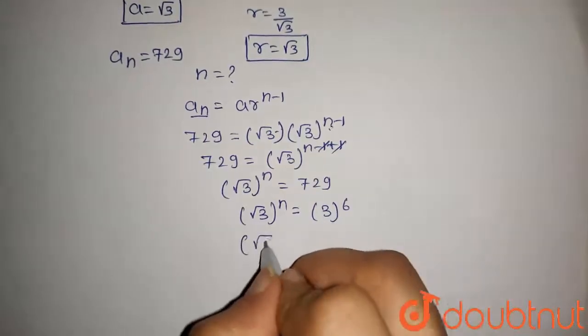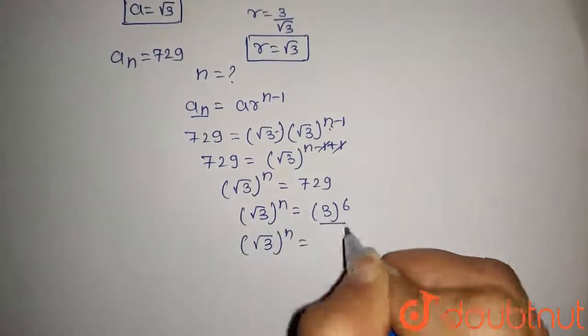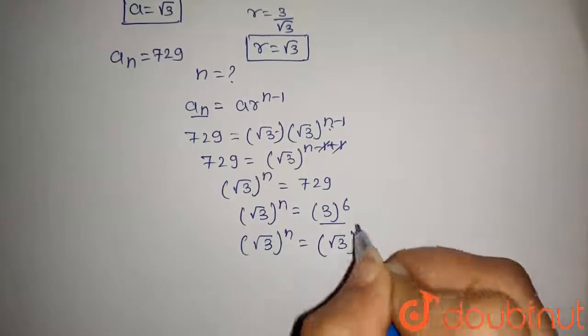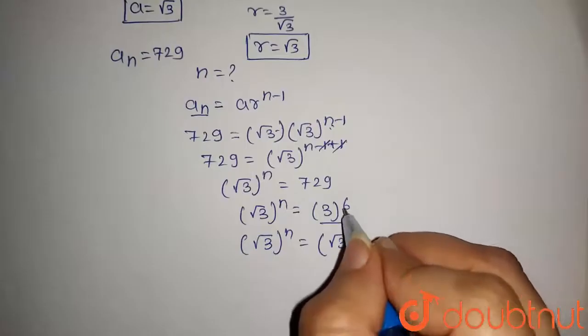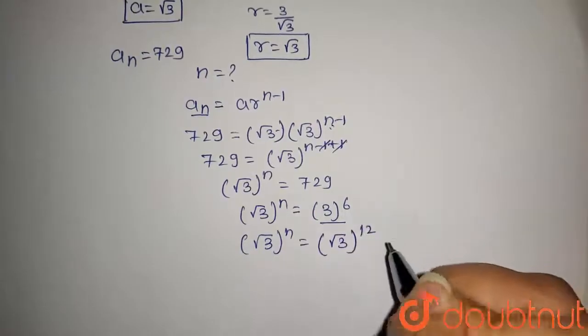This can be written as ((√3)²)^6. The powers will get multiplied, so it will be 2 times 6 that is 12.